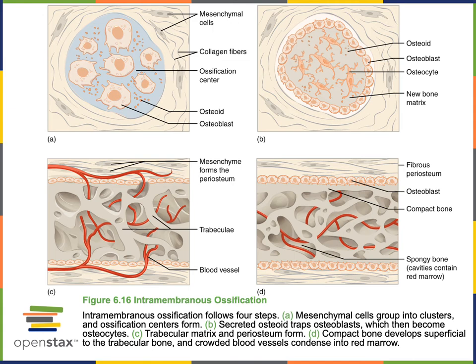The mechanism of intramembranous ossification produces bone from a fibrous connective tissue, such as the dermis. Intramembranous ossification is the mechanism that leads to the production of most of the flat bones of the cranium — for example, the parietal bone, frontal bone, and portions of the temporal and occipital bones are all formed from intramembranous ossification of the overlying dermis.